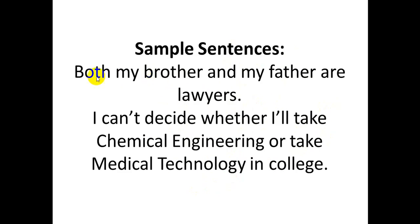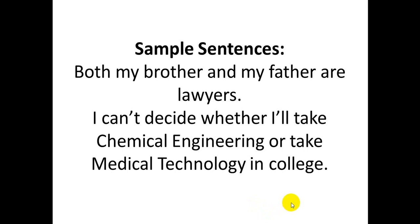Examples of correlative conjunctions: 'Both my brother and my father are lawyers.' Here the correlative conjunction pair is 'both...and.' 'I can't decide whether I will take chemical engineering or take medical technology in college' — 'whether...or.' 'Neither I bought a pen nor a pencil.' 'Either I bought an apple or an orange.' These correlative conjunctions are very useful in error detection, fill-in-the-blanks, and improvement questions.